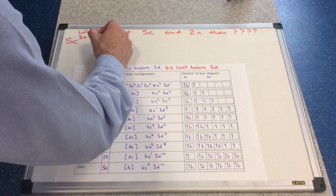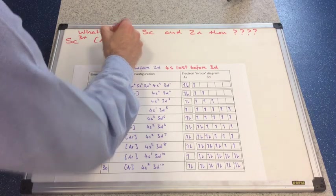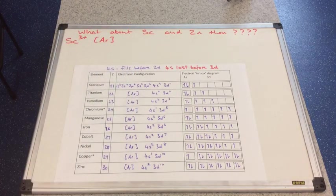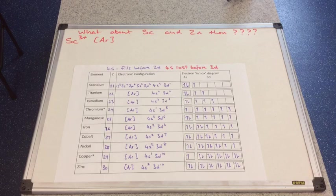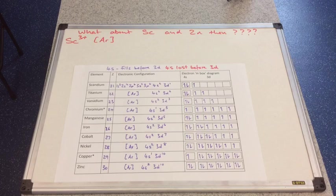So it's effectively just argon. So does that have an incomplete 3d subshell? Well, it hasn't even got any electrons in the 3d subshell. So it's not satisfying that condition. So that's why scandium is actually not a transition element.